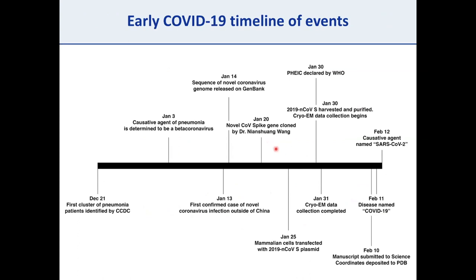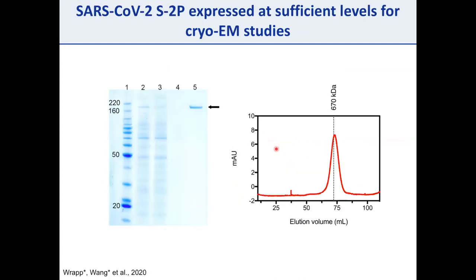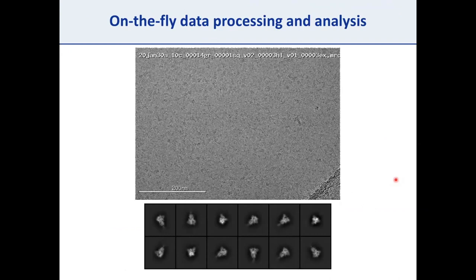We transfected half a liter of mammalian cells and five days later harvested purified S2P protein. While the 2P mutations didn't give the same dramatic expression boost seen in MERS and SARS-CoV-1, we purified an extremely pure pre-fusion product — visible as a single band on SDS-PAGE — and a single symmetrical SEC peak at the expected molecular weight for a densely glycosylated pre-fusion trimer. We took the sample to our cryo-EM facility at UT Austin, froze grids, and because of prior spike experience, started collecting high-resolution data that same night. After 24 hours of data collection with Leginon, micrographs were processed in real time using WARP — which handles motion correction, CTF estimation, and particle picking on the fly.